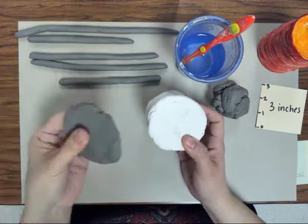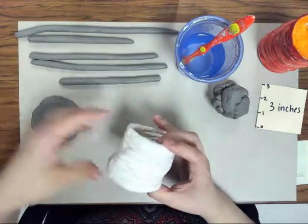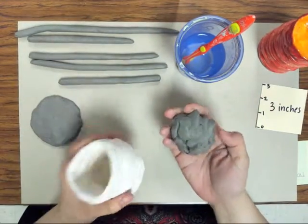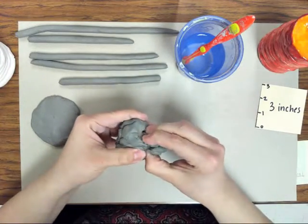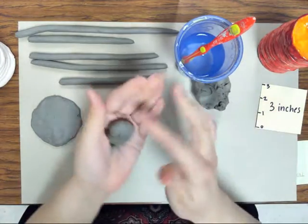You're going to need a circle for the bottom of the cup and then you're going to need a big piece of clay. We're going to break the clay into smaller pieces.